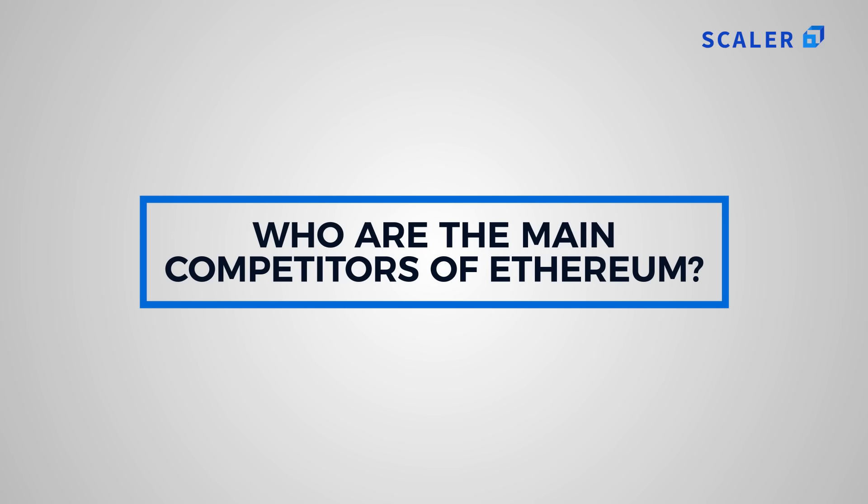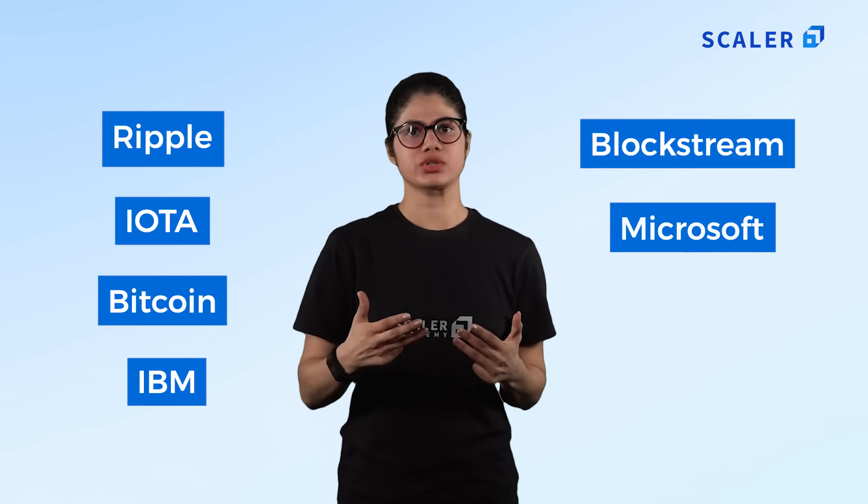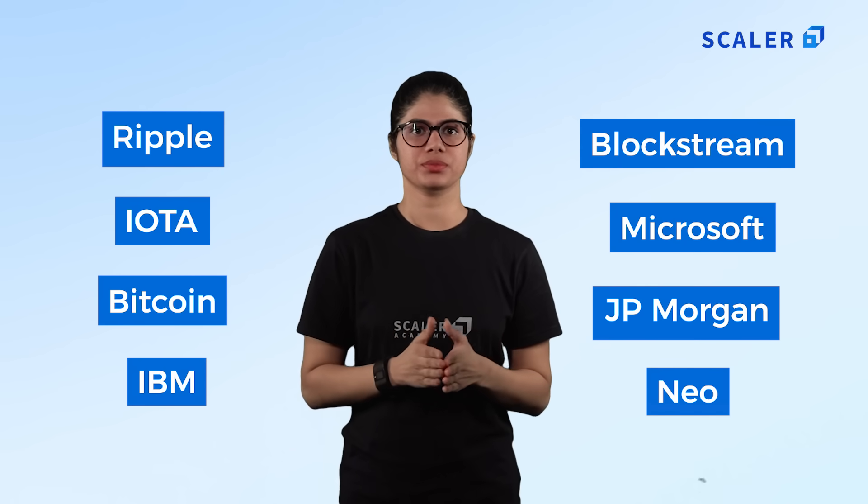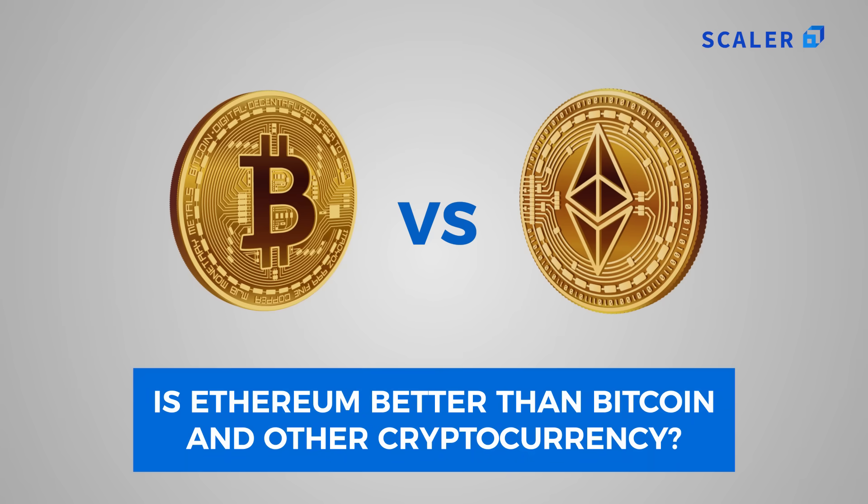The main cryptocurrency competitors of Ethereum for companies investing in blockchain systems are Ripple, IOTA, Bitcoin, IBM, Blockstream, Microsoft, JP Morgan, and NEO. Is Ethereum better than Bitcoin? The Ethereum blockchain is a platform built to provide an in-house cryptocurrency for applications, while the Bitcoin blockchain was created to support cryptocurrency alone. Ethereum was created with a much wider ambition — it aims to be a platform that can safely store information for all kinds of applications, making the creators of both currencies huge rivals today.